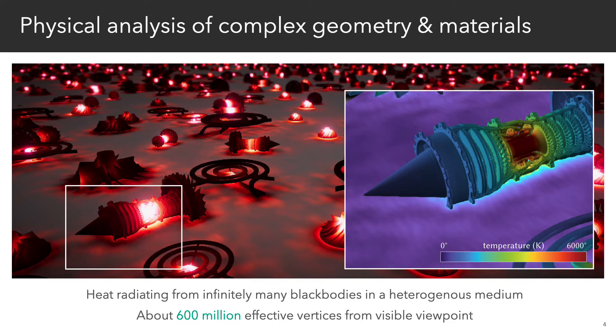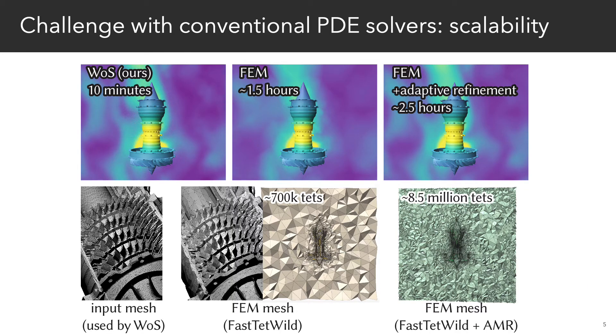Now, to get the same level of detail with a conventional PDE solver such as the finite element method, we need about 8.5 million tetrahedra and 2 and a half hours of meshing time even on a tiny piece of the scene.